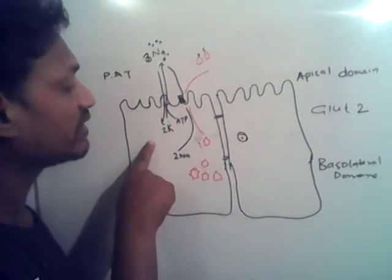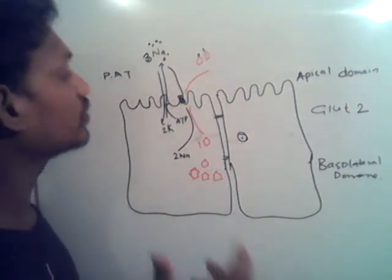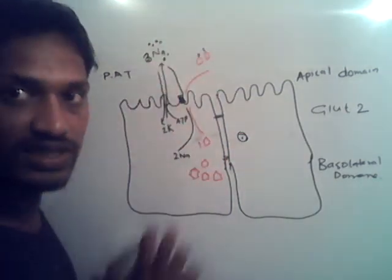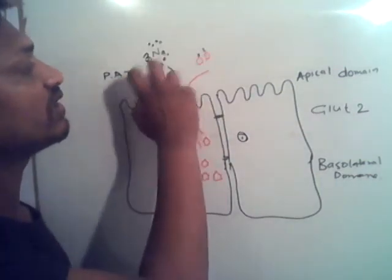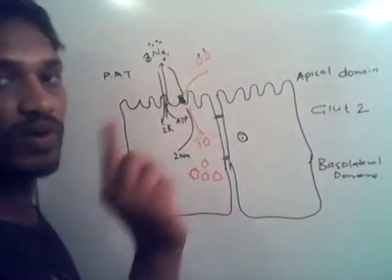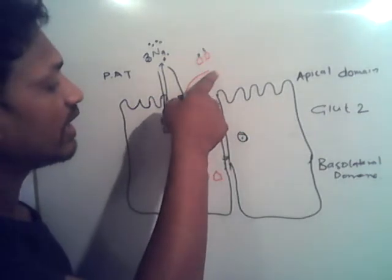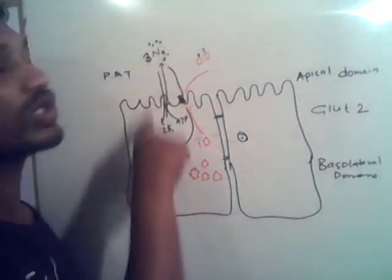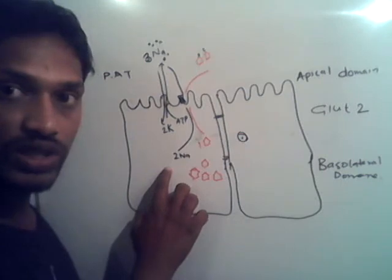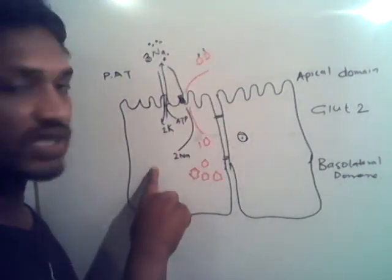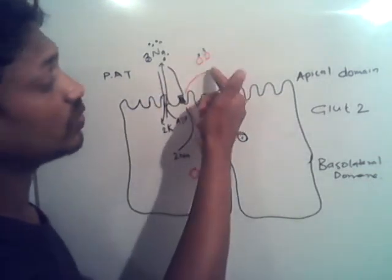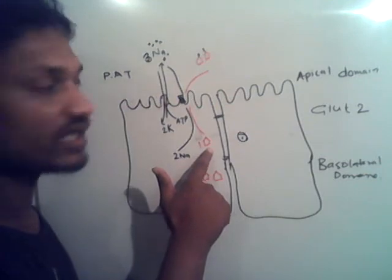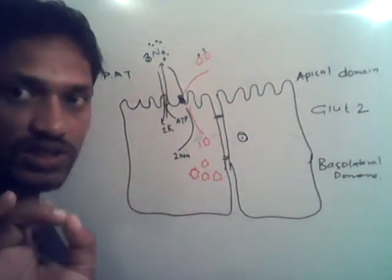Because potassium entered inside the cell and sodium is outside due to the primary active transport, a potential energy gradient is developed. One glucose molecule and 2 sodium ions combine together and come inside the cell. The sodium concentration is low inside because we sent too much sodium outside. Glucose is less outside and more inside — this transport takes place against the concentration gradient and is known as secondary active transport.